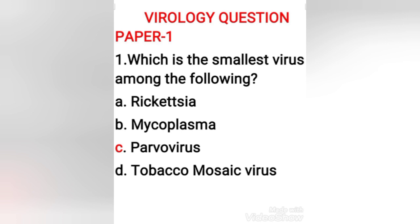Primate erythro parvovirus 1 is generally referred to as B19 virus. It is the first known human virus in the family Parvoviridae. It measures only 23 to 26 nanometers in diameter. The name is derived from the Latin word 'parvam,' which means small, reflecting the fact that B19 ranks among the smallest DNA viruses.